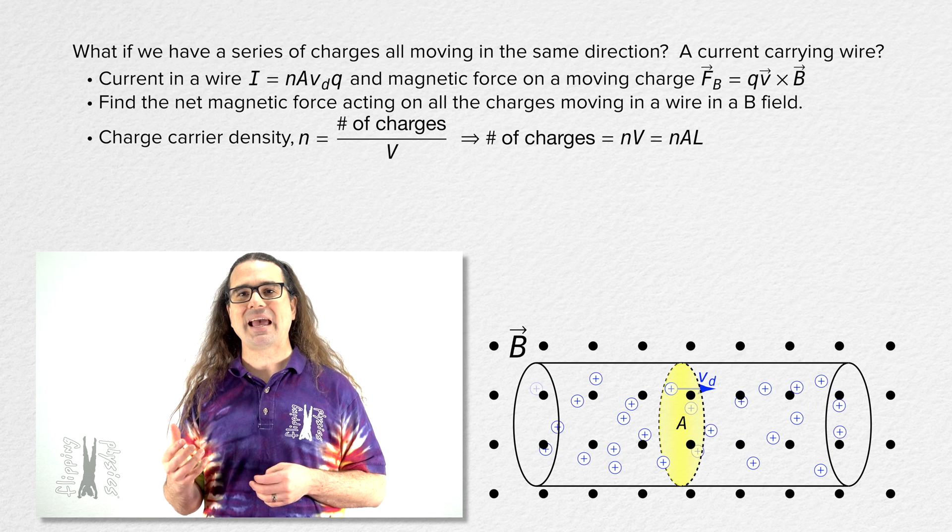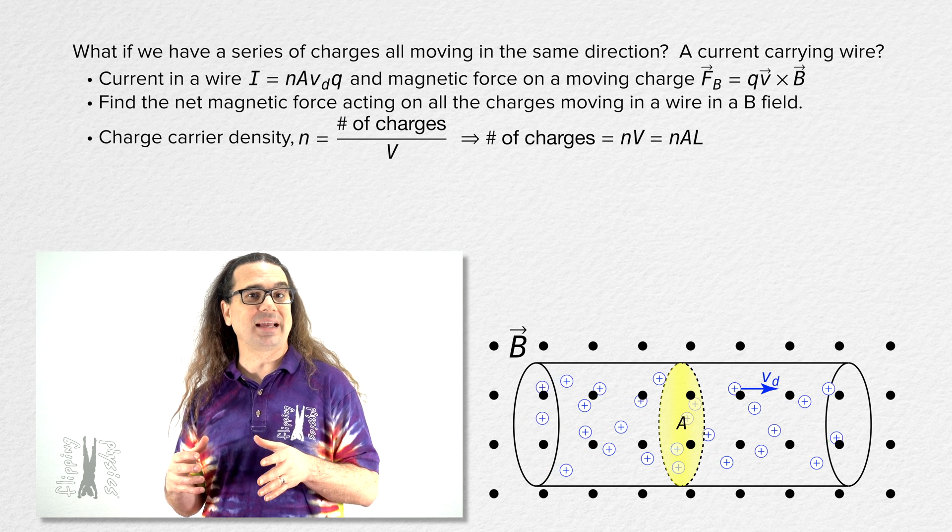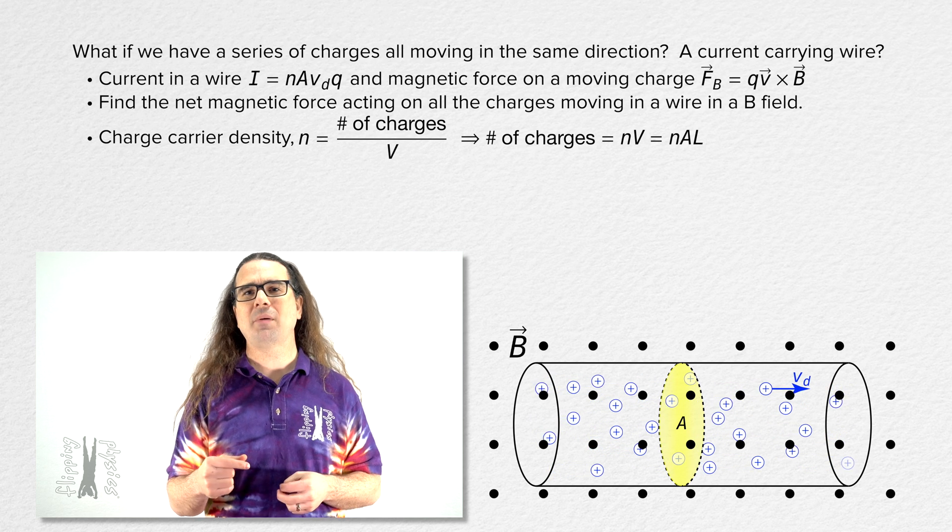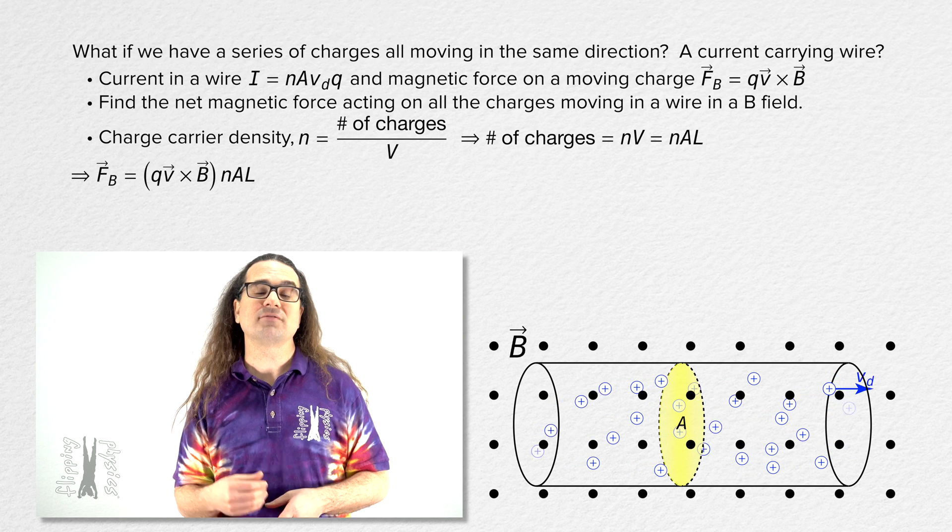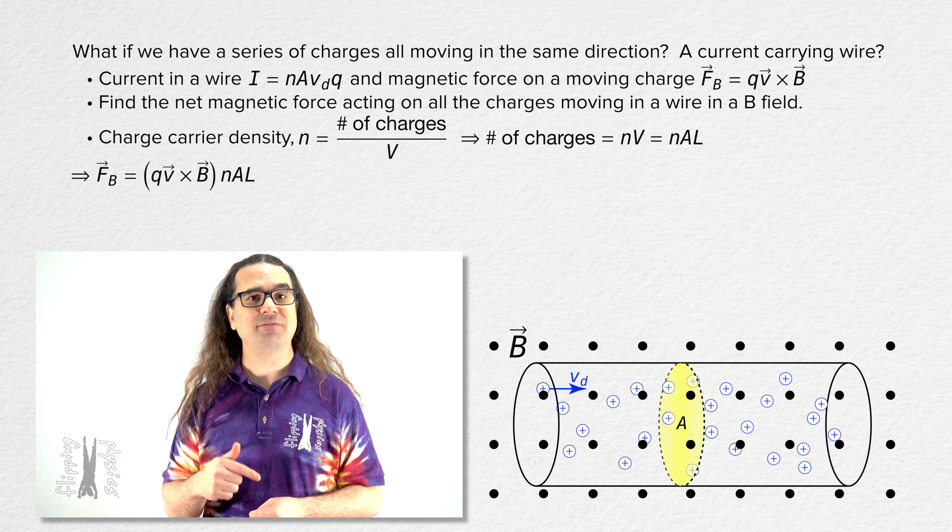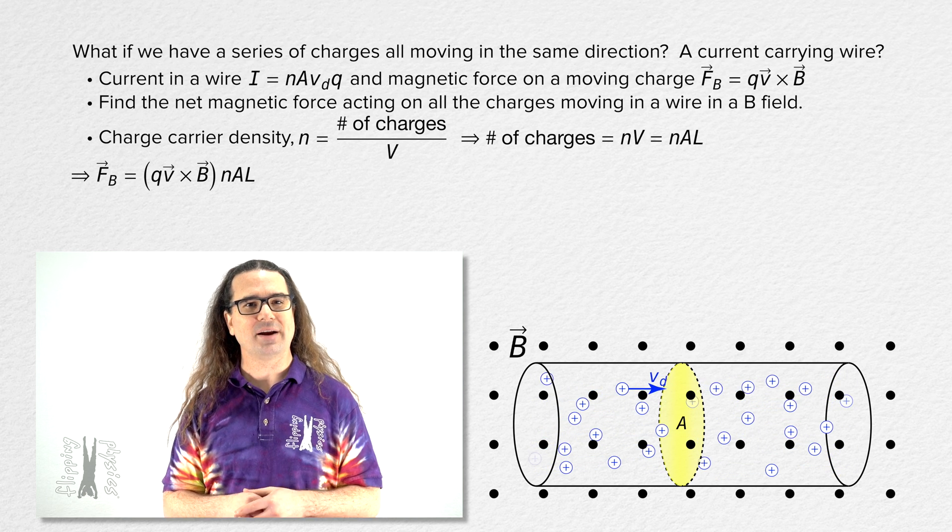That means the magnetic force acting on all the moving charges in the wire equals the magnetic force acting on one charge multiplied by the number of charges. Or, the cross product of charge times velocity and magnetic field all times charge carrier density times cross-sectional area times the length of the wire.